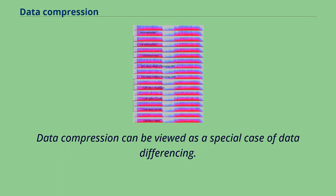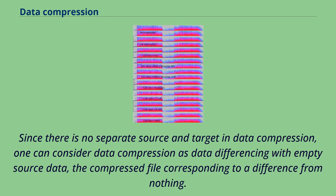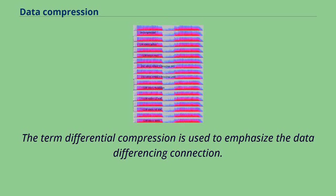Data compression can be viewed as a special case of data differencing. Data differencing consists of producing a difference given a source and a target, with patching reproducing the target given a source and a difference. Since there is no separate source and target in data compression, one can consider data compression as data differencing with empty source data, the compressed file corresponding to a difference from nothing. This is the same as considering absolute entropy as a special case of relative entropy with no initial data. The term differential compression is used to emphasize the data differencing connection.